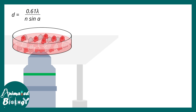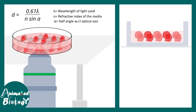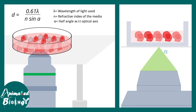Let us understand the terms. Lambda (λ) stands for the wavelength, n stands for the refractive index of the media, and alpha (α) stands for the half angle with respect to the optical axis. Looking at the image of an objective imaging cells, the wavelength used is green light and alpha is the half angle with the optical axis. In this case it's an oil immersion objective, so n is the refractive index of the immersion oil.